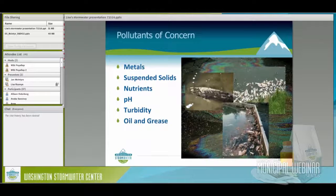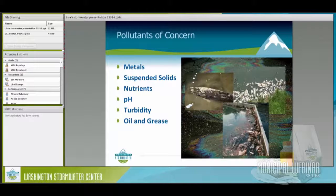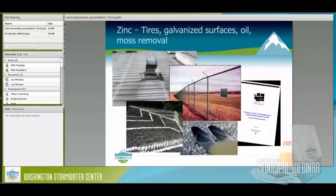The pollutants of concern we talk about most: metals, suspended solids, nutrients, pH — how acidic or basic the water is for aquatic life to survive — turbidity, which is the cloudiness in the water that can cause problems for fish, and oil and grease from cars. Other issues include fats, oils, and greases from restaurants not being cleaned properly, dumping oil or washing mop water into the street.